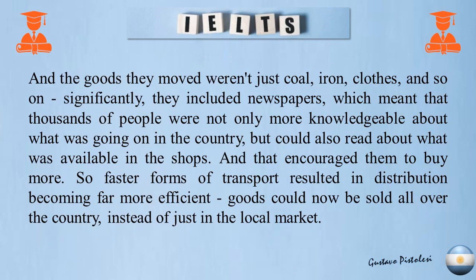And the goods they moved weren't just coal, iron, clothes and so on. Significantly, they included newspapers, which meant that thousands of people were not only more knowledgeable about what was going on in the country, but could also read about what was available in the shops — and that encouraged them to buy more. So faster forms of transport resulted in distribution becoming far more efficient. Goods could now be sold all over the country, instead of just in the local market.